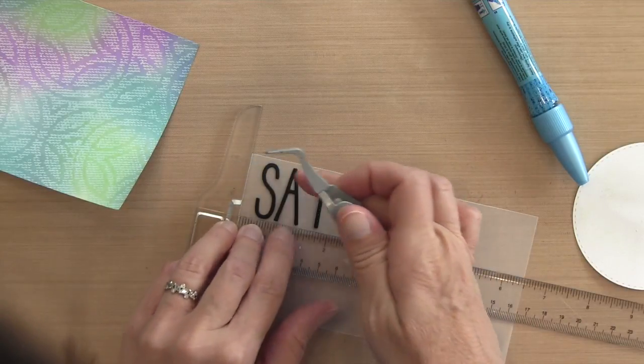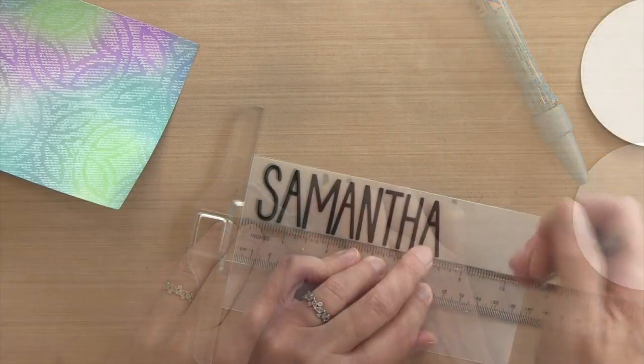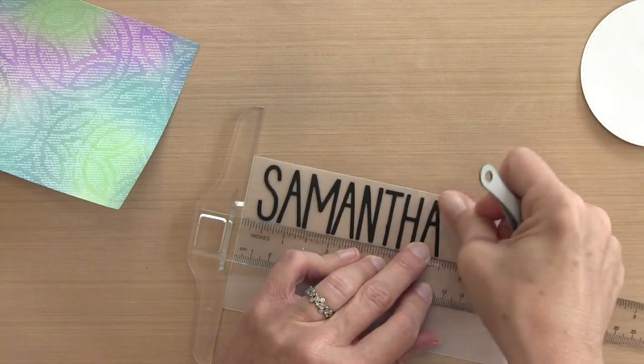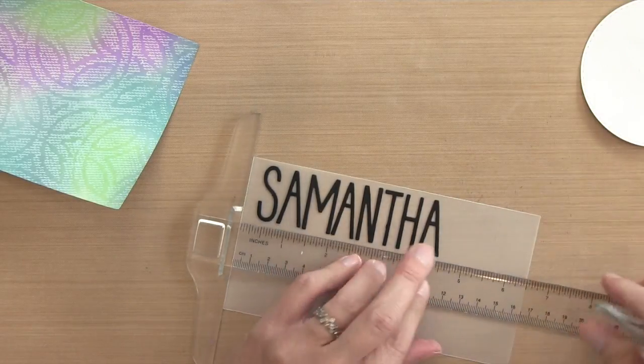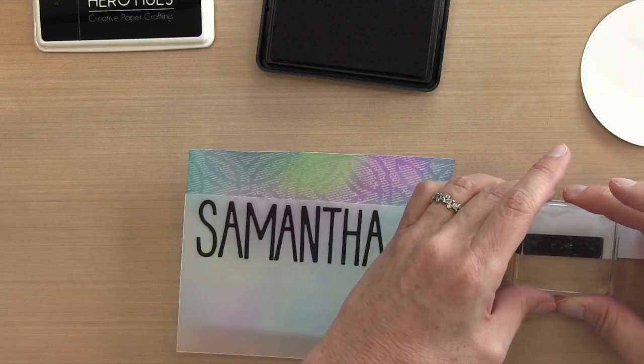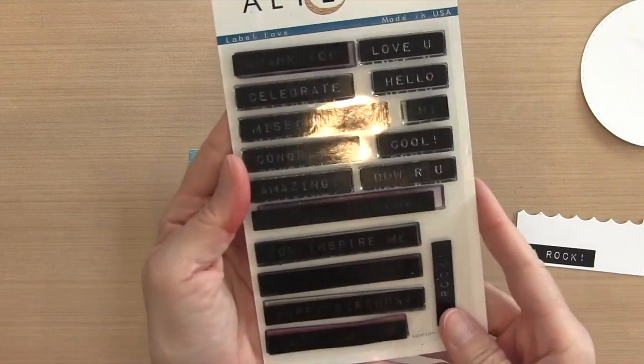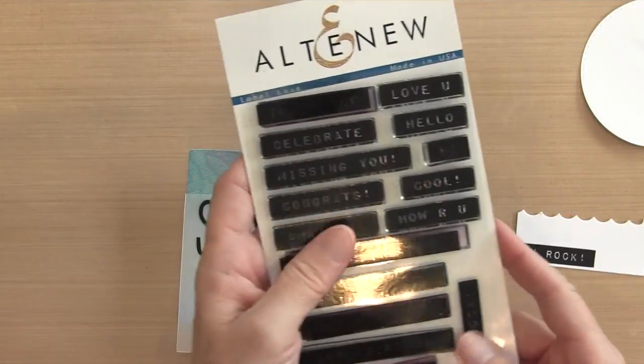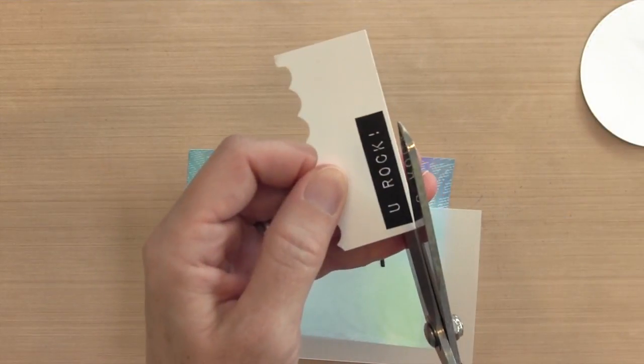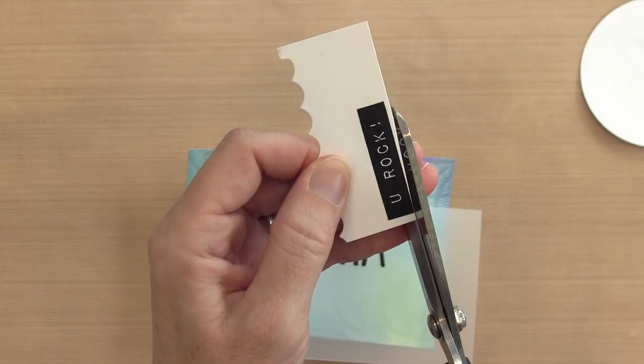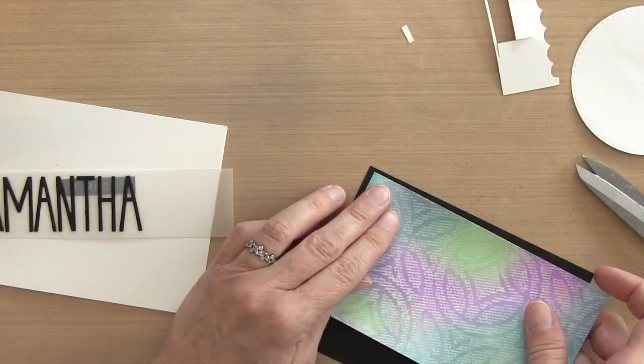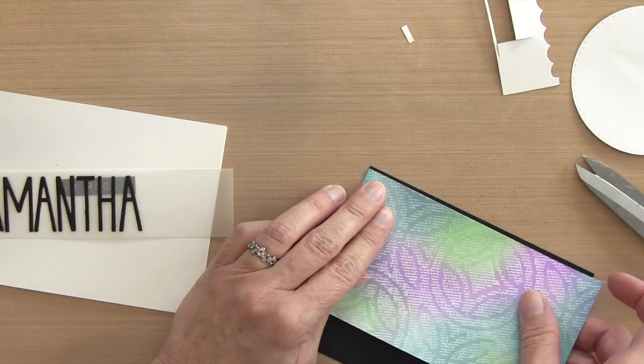And so I'm just going to do this for all the letters until I get to the end. And then I have my name all set and I can trim that along the bottom. Now for the second part of the sentiment, I'm using this Altenew Label Love. I forgot to show it—here it is. I love it because it's a great way to get a white sentiment on a dark background without having to deal with heat embossing. And I usually just cut these out with a scissor and pop them up.